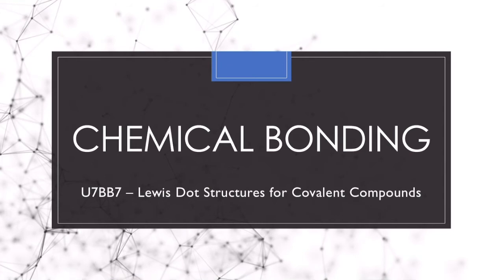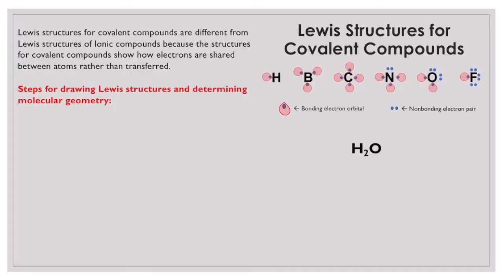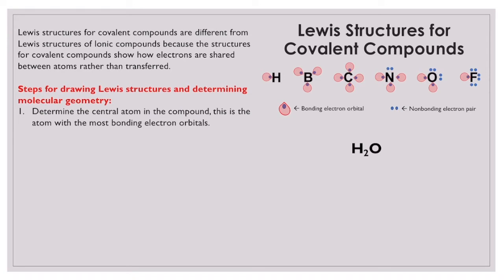Hey guys, this is Ms. Buffard and in this video we're going to talk about Lewis dot structures for covalent compounds. The goals for this video are to be able to draw Lewis dot structures to illustrate covalent compounds, and be able to explain why molecules take the shape they do based on valence shell electron pair repulsion theory. We're going to talk about how to draw these Lewis dot structures first.